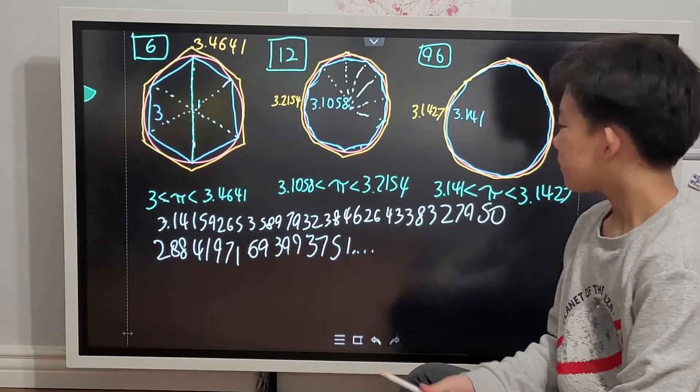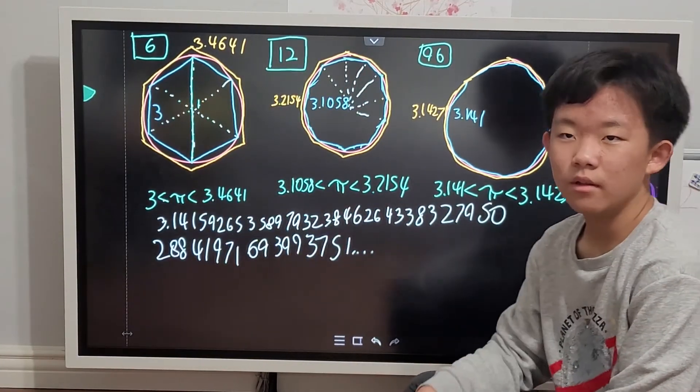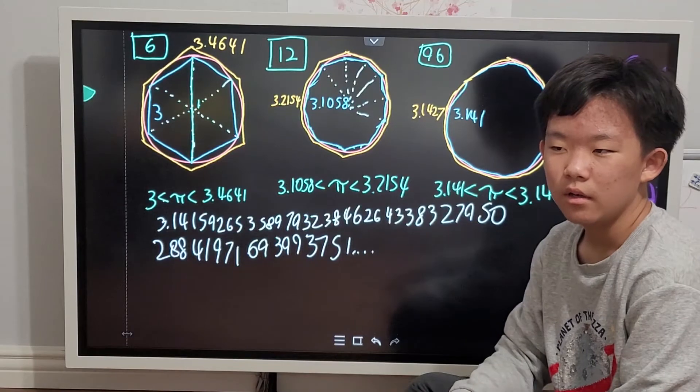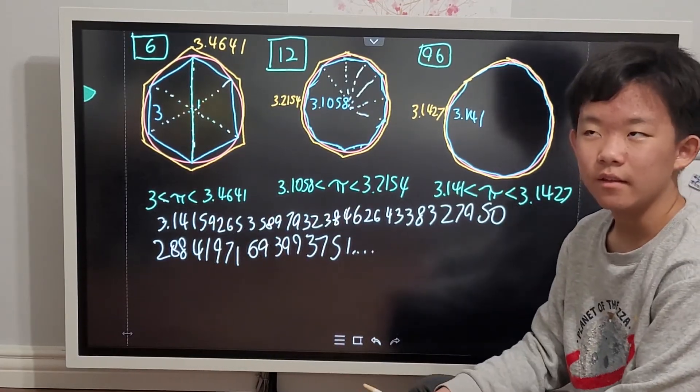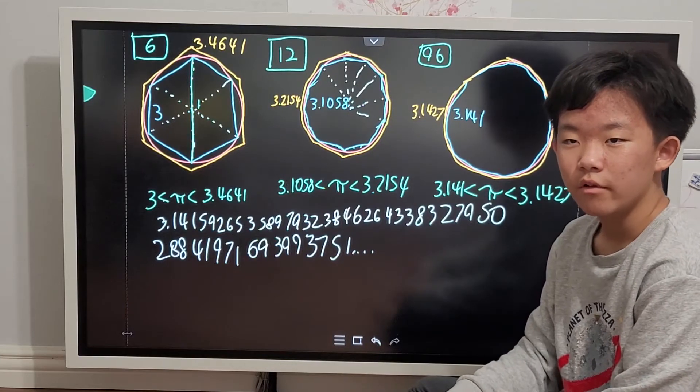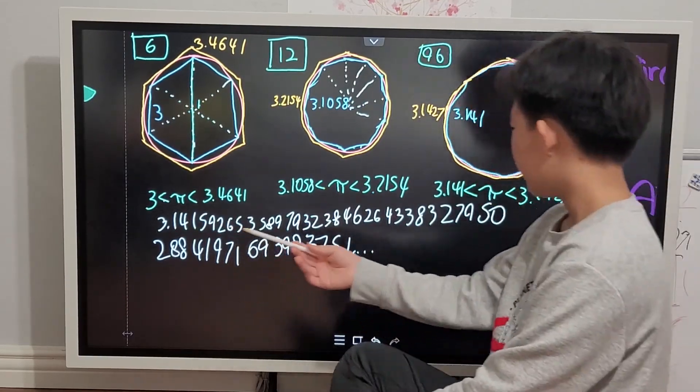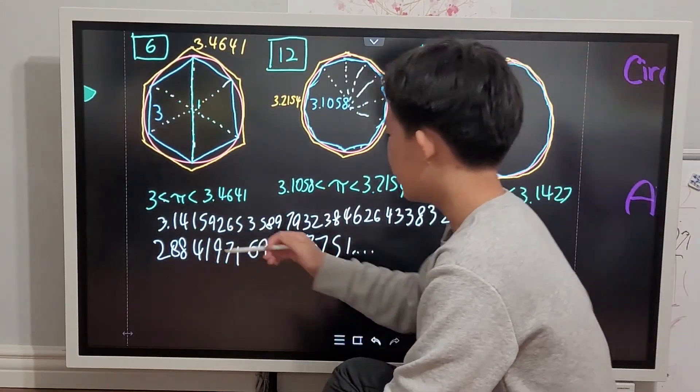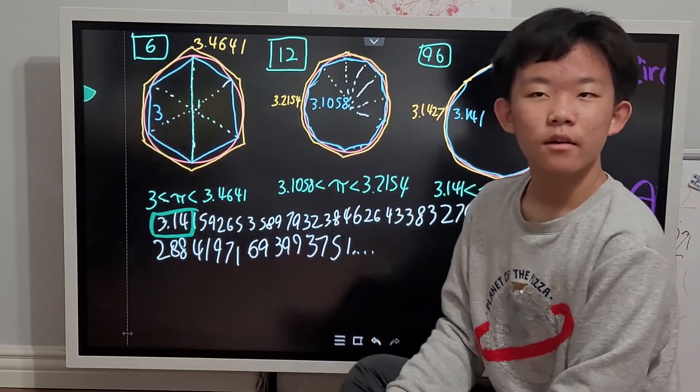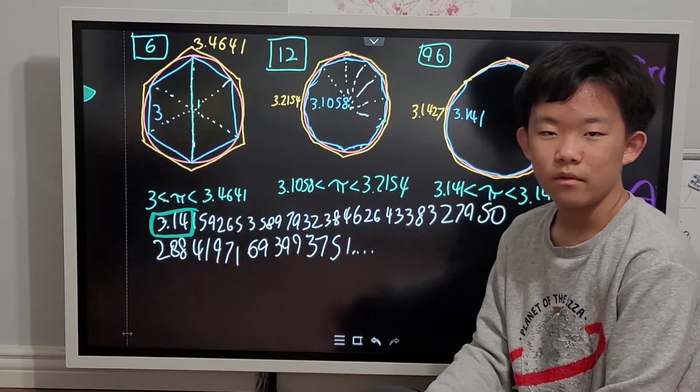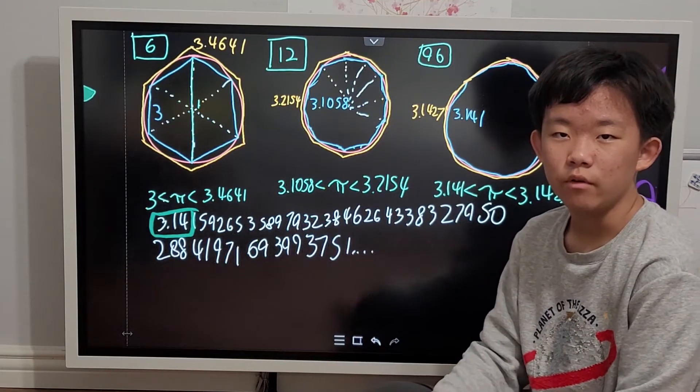But obviously, a number this long would be very inconvenient to write. In fact, this is just the first 50. So what we do is, instead of writing all of this, we instead just take this point out and only read that, which is why a lot of you guys know pi equals 3.14.